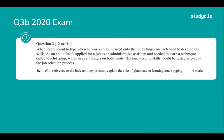Now this is another question, very similar to the previous one but the application is different. When Rahaf learnt to touch type as a child, he used only the index finger on each hand. As an adult, Rahaf applied for a job as an administrative assistant and needed to learn touch typing using all the fingers on both hands, with his skills to be tested as part of the job selection process. With reference to the lock and key process, explain the role of glutamate in touch typing. This question is also worth four marks — four pieces of information.